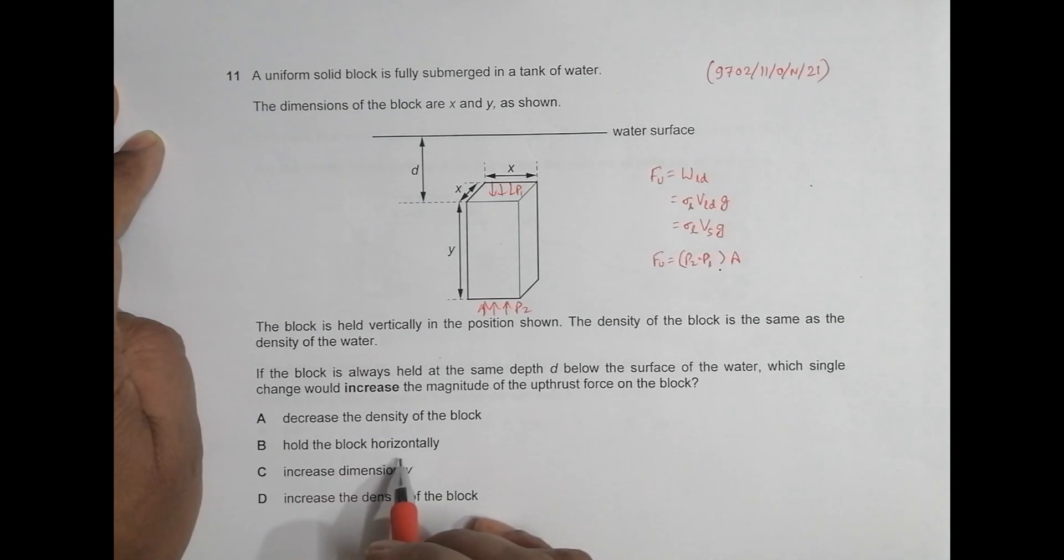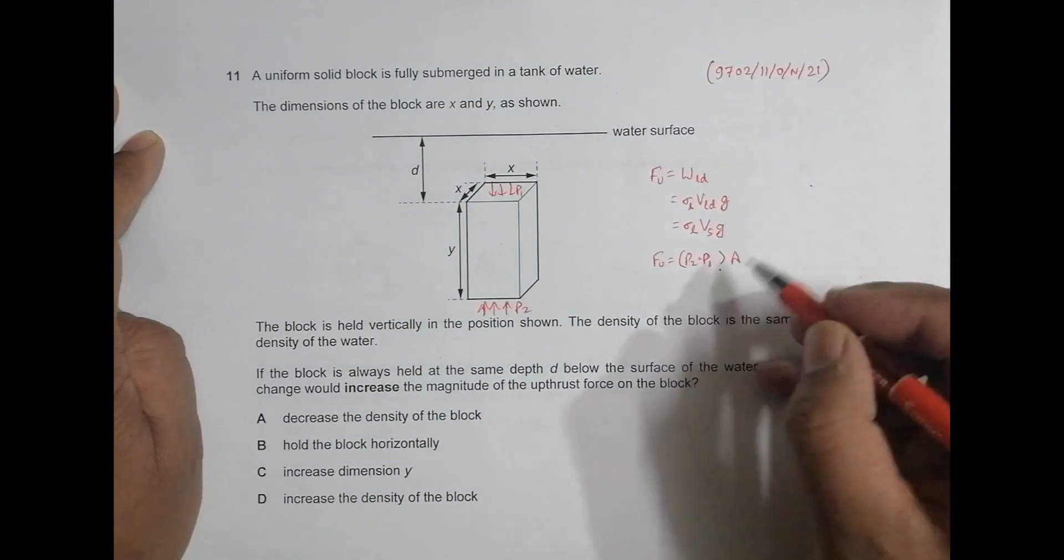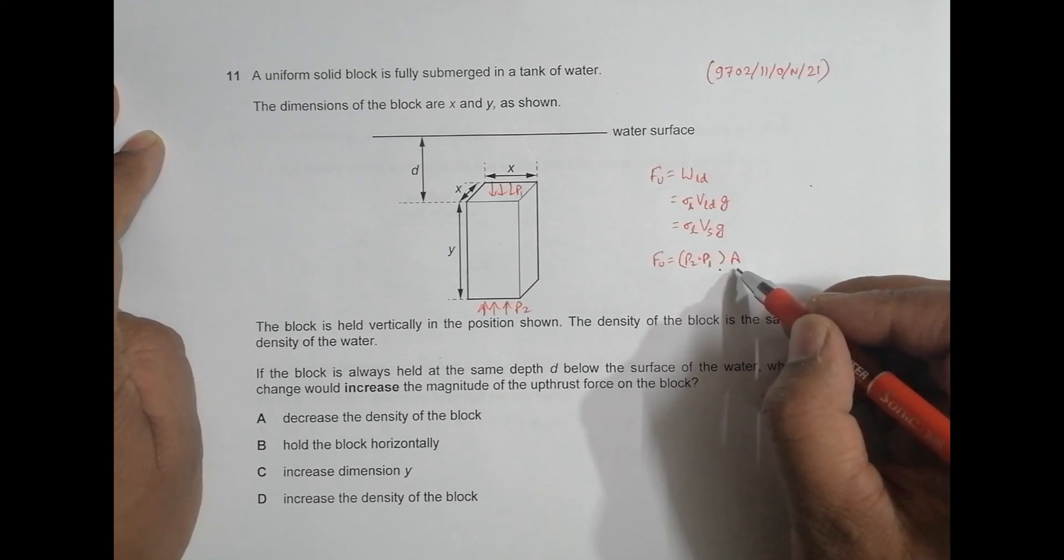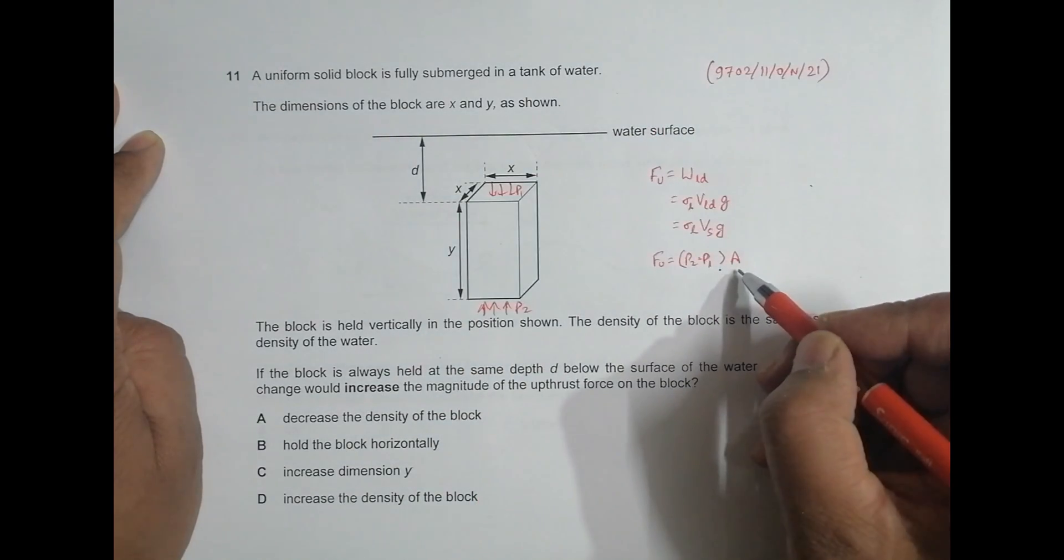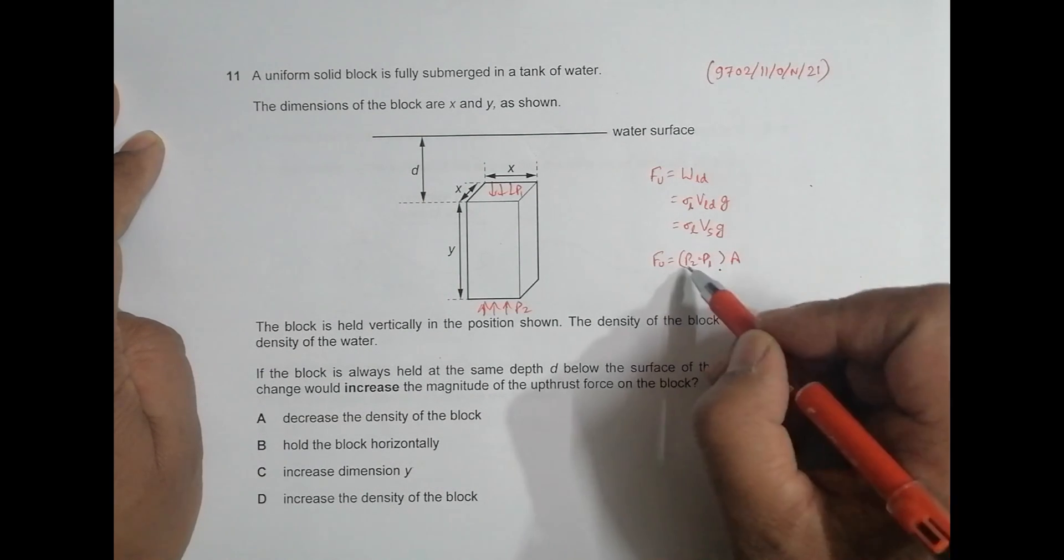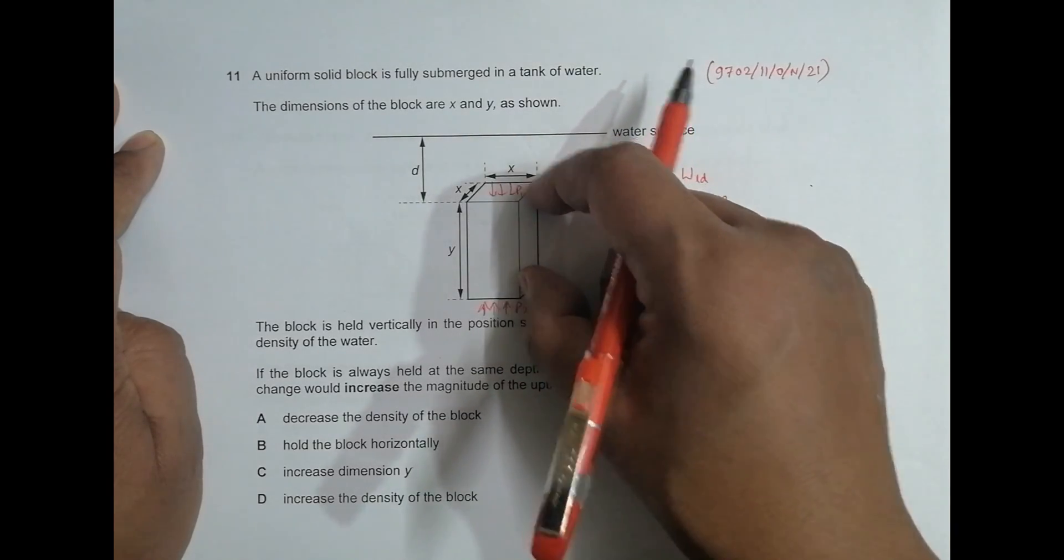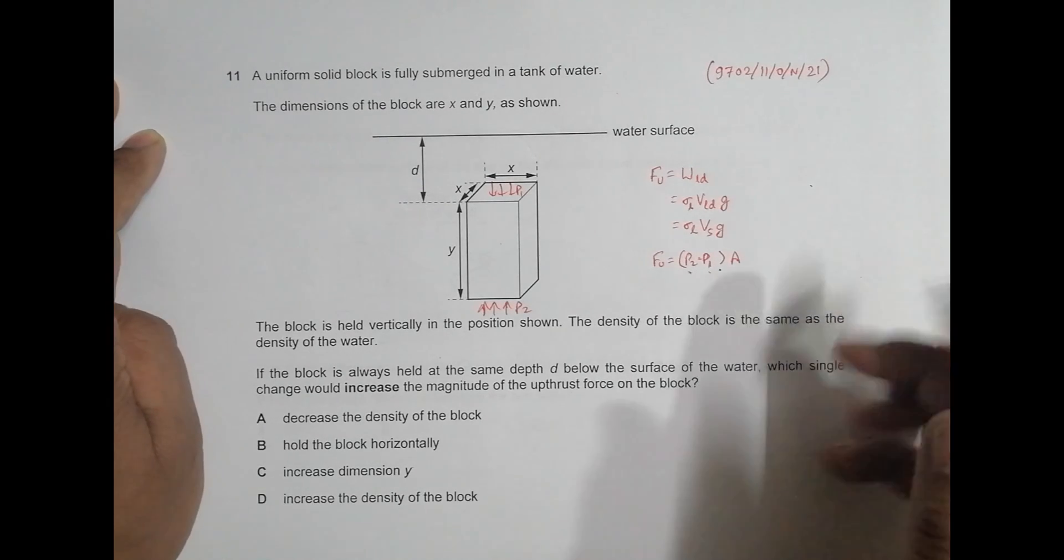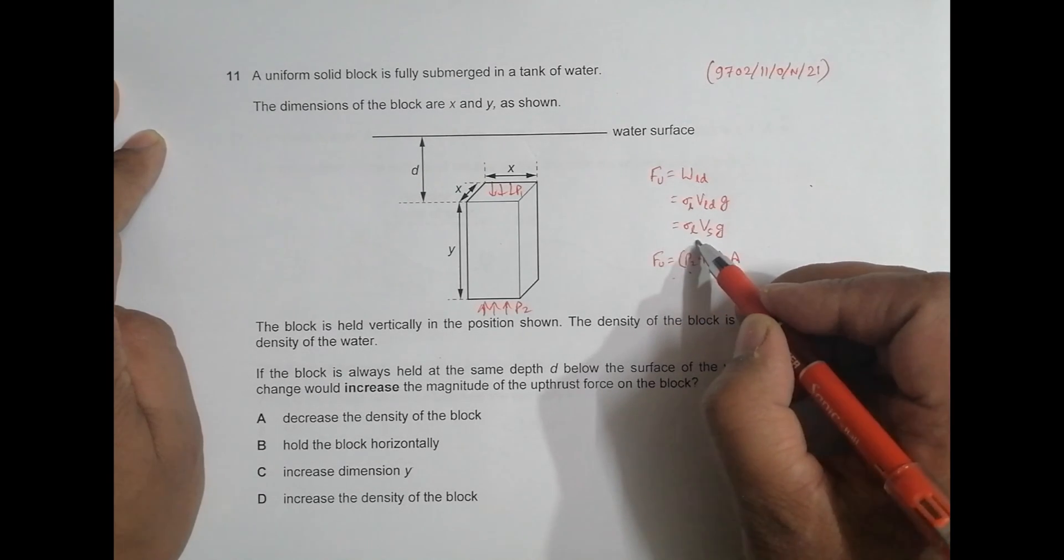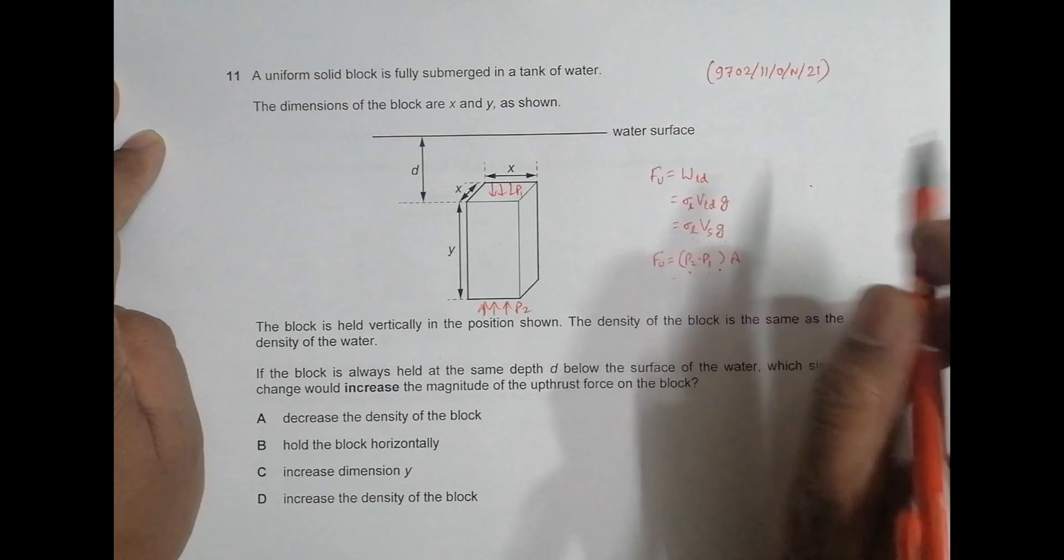Hold the block horizontally. So now if I hold the block horizontally like this, what can happen is this area can change. But what happens is this thickness also changes. This difference in height also changes. Area will increase, but this thing decreases. Because the difference in depth of upper and lower, they also change, and ultimately upthrust will become the same. We can also state that by this formula, because the volume of solid is same, liquid is same, density of liquid is same.